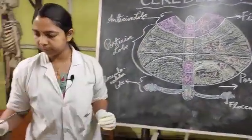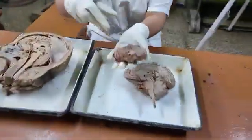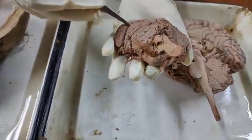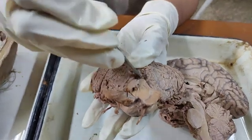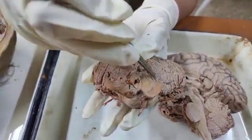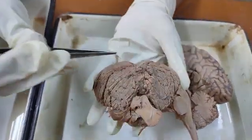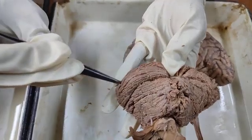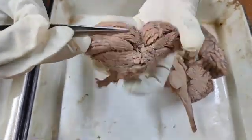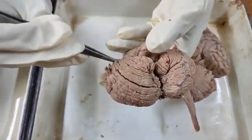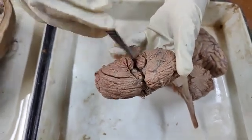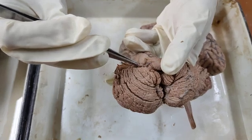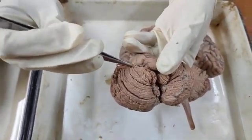Let us look at the viscera and identify important structures. This is the superior vermis. This is the fissura prima, so this is the anterior lobe. Among the superior vermis, this is the lingula, which does not give rise to any lobe laterally. Behind the fissura prima is the posterior lobe; rostral to the horizontal fissure is the superior part, and behind it is the inferior part, extending up to the posterolateral fissure. This is the inferior vermis and this is the tonsil of the cerebellum. Behind the posterolateral fissure, this is the flocculus, which is the extension of the nodule part of the vermis.